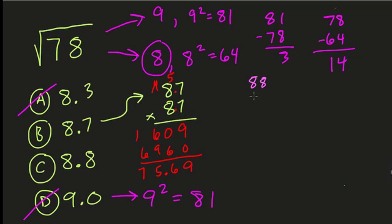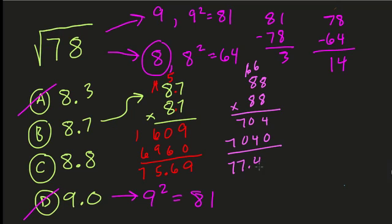So 88 squared, set this up real quick. 8 times 8 is 64. 8 times 8 is 64, plus 6 is 70. Carry the 0. 8 times 8 is 64. 8 times 8 is 64, plus 6 is 70.